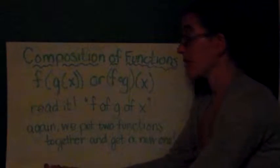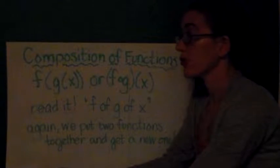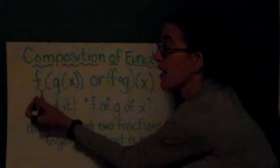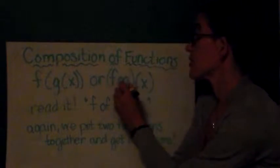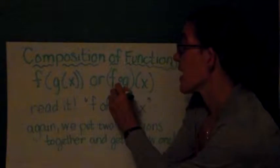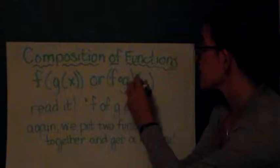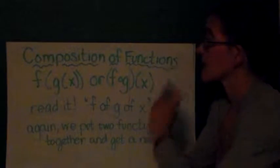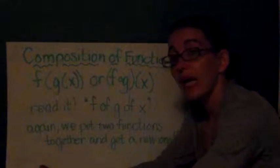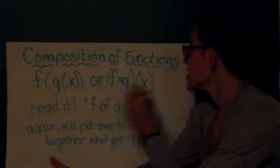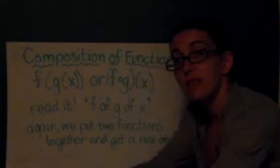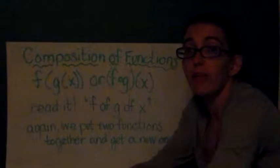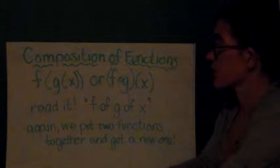So, composition of functions can be notated in one of two ways. We can see this, f(g(x)) with two closed parentheses, or you can see f circle g in parentheses, and then x in parentheses. A reminder to all of you, that this x in parentheses is not meaning that you multiply by x, it's meaning that that's the variable, the input variable for the function.